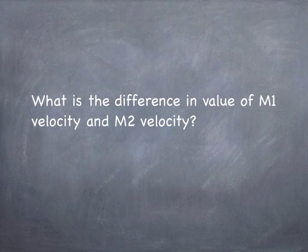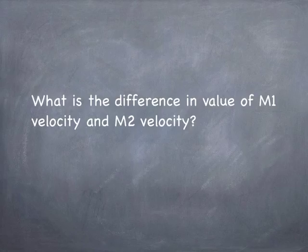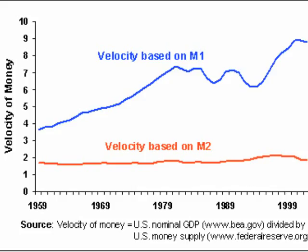What is the difference in value of M1 velocity and M2 velocity? M1 velocity is larger than M2 velocity. M1 is used for transactions, while a significant portion of M2 is used for savings, so it doesn't change on a daily or weekly basis.